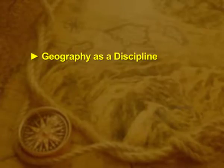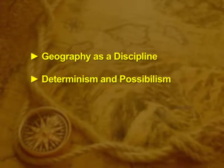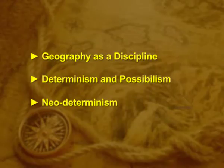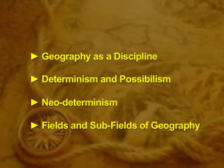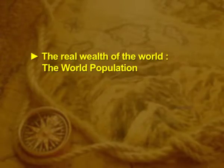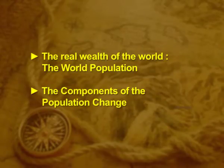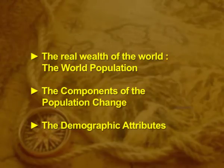Before we conclude, let us glance at the topics we have already learned. We have learned geography as a discipline, determinism and possibilism with the help of two case studies, neo-determinism, and the fields and sub-fields of geography. In the lectures that follow, we will study the real wealth of the world — that is, the world population, the components of population change, and we will keenly look into the demographic attributes. Thank you.